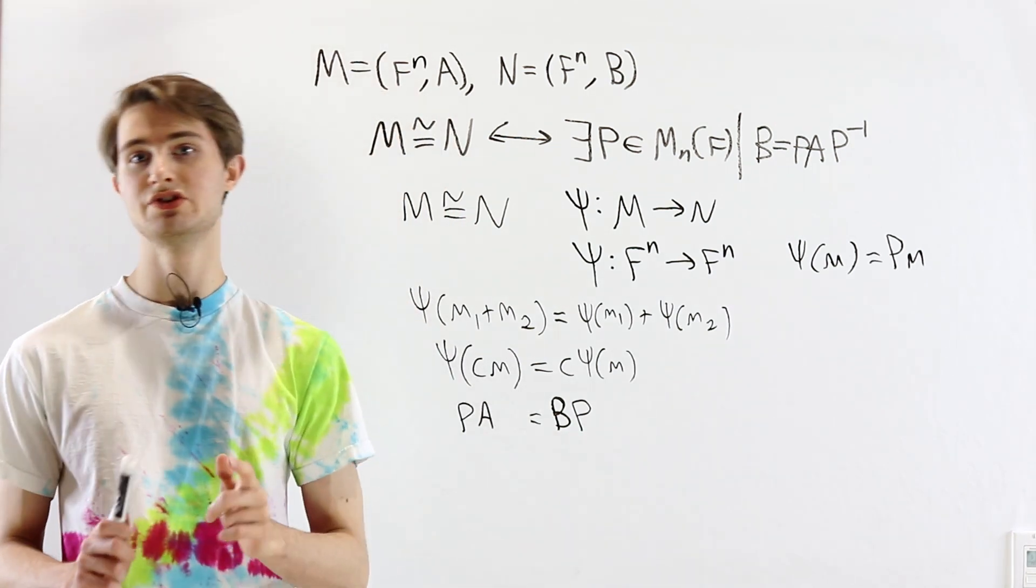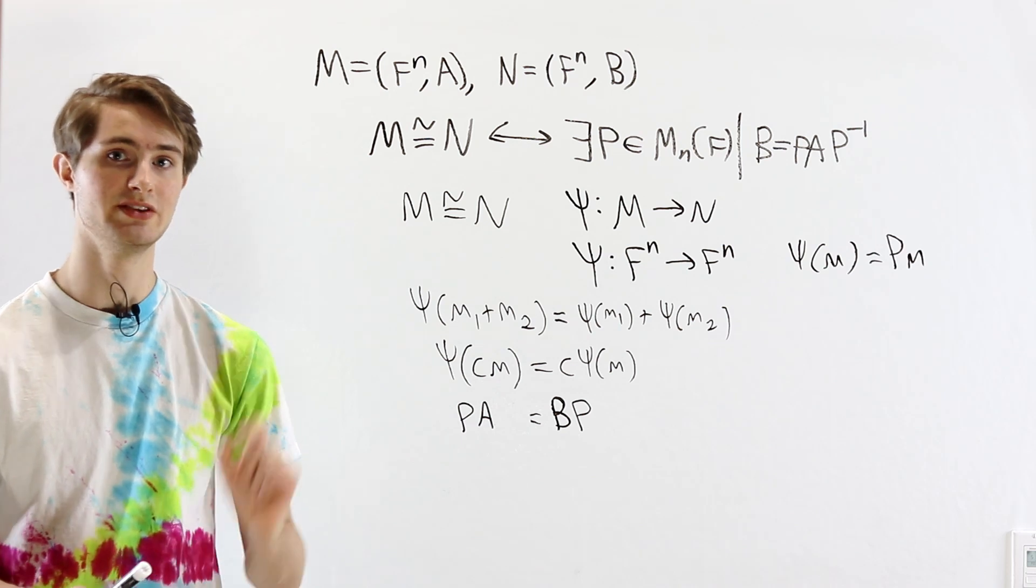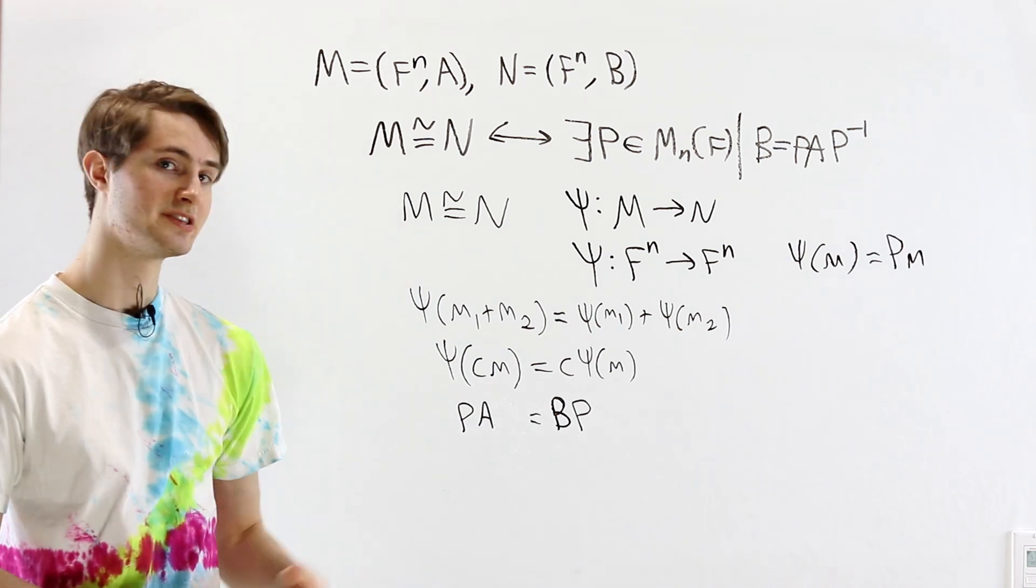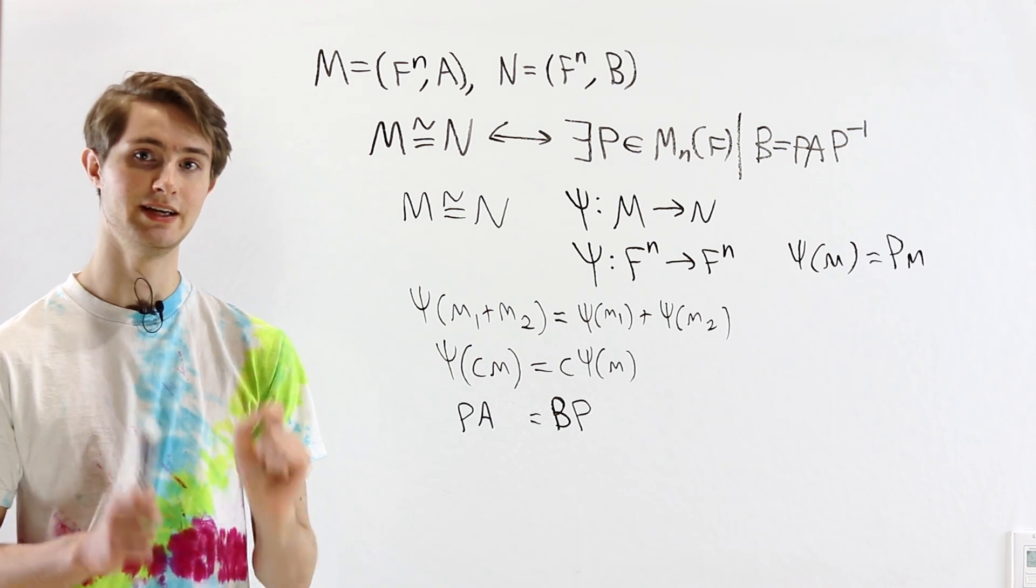And the last condition for ψ to be an isomorphism is that it is a bijection. In particular, ψ is going to have a two-sided inverse.